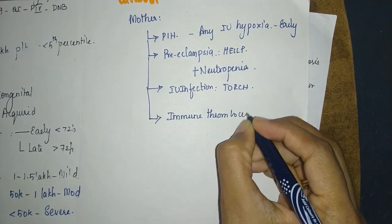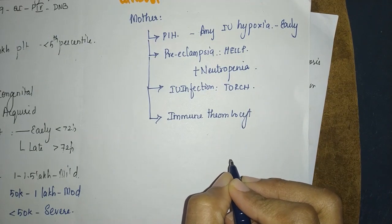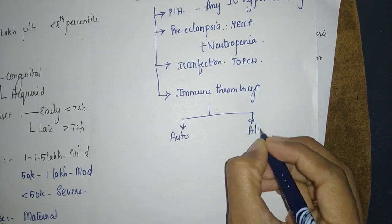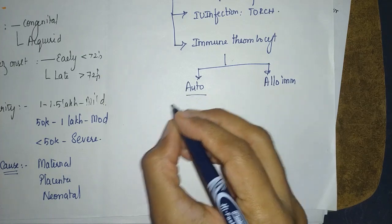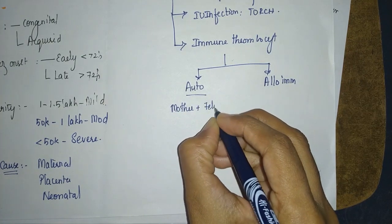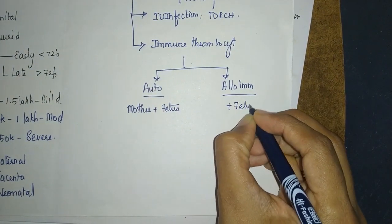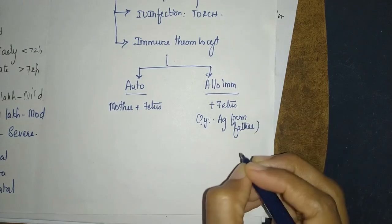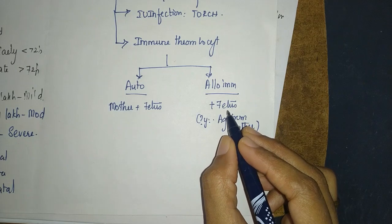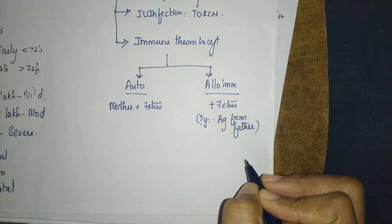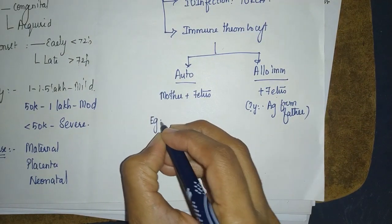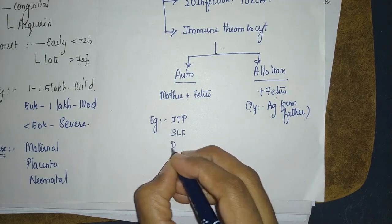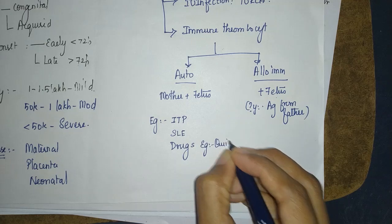The baby per se is not going to mount an immune response to the platelets — only the mother is going to do that. As far as immune thrombocytopenia is concerned, it can be two types: autoimmune or alloimmune. Auto means antibodies produced by the mother affect both mother and fetus. Alloimmune is only against the fetus, because the fetus has an extra antigen from the father. The mother fights with the father — this extra antigen develops an antibody by the mother and it crosses the placenta to affect the fetus alone. Mother is not going to get affected because she does not have that antigen.